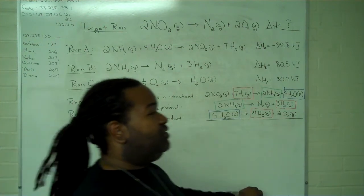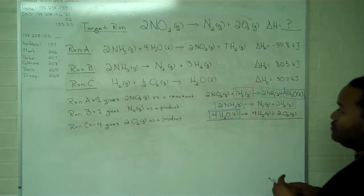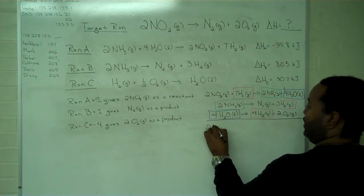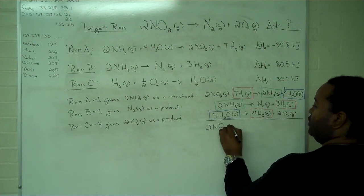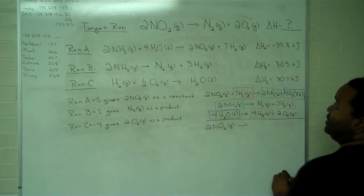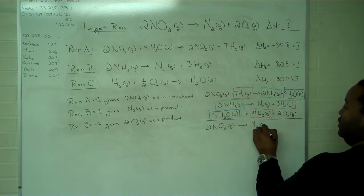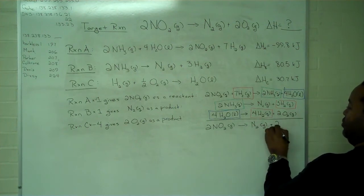So with all of these cancellations done, it's now straightforward to demonstrate that I have my target reaction back with the correct quantities of everything, as well as the correct location with respect to being a reactant or a product.